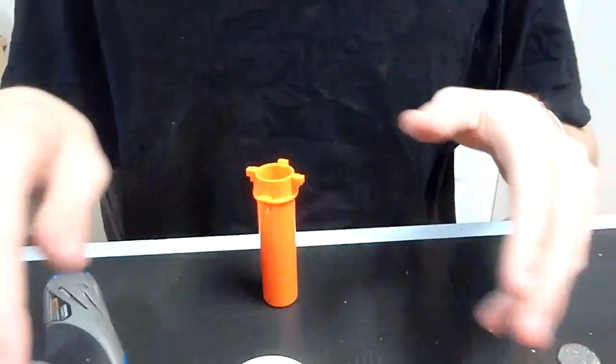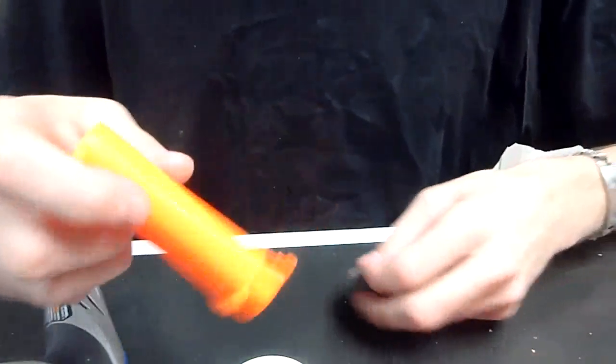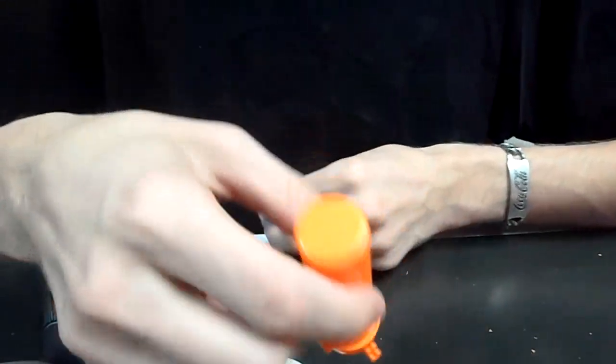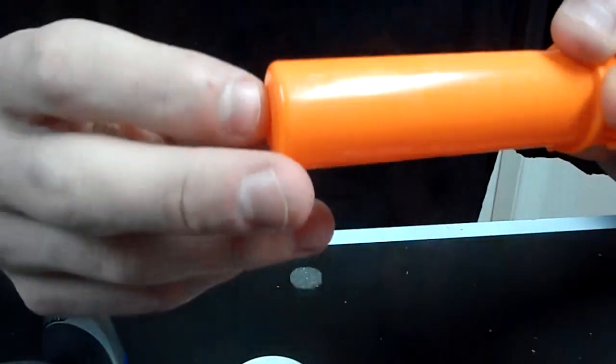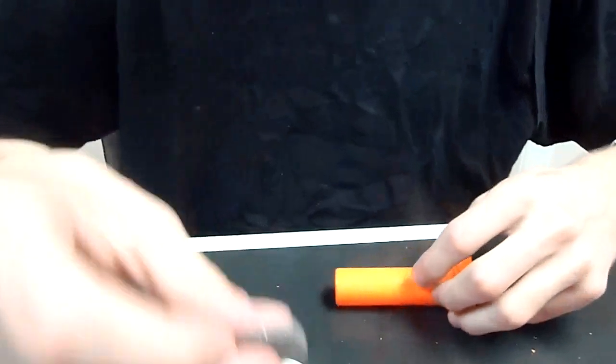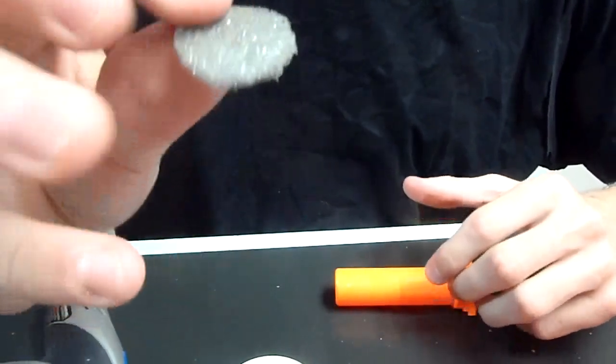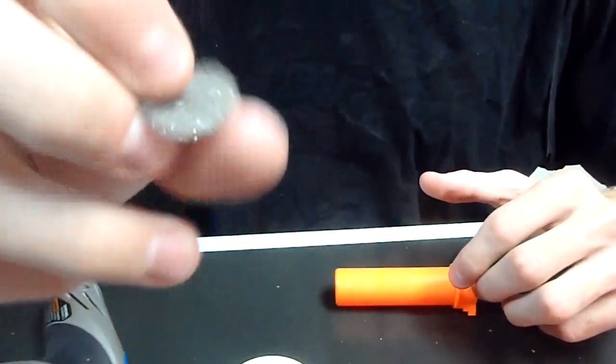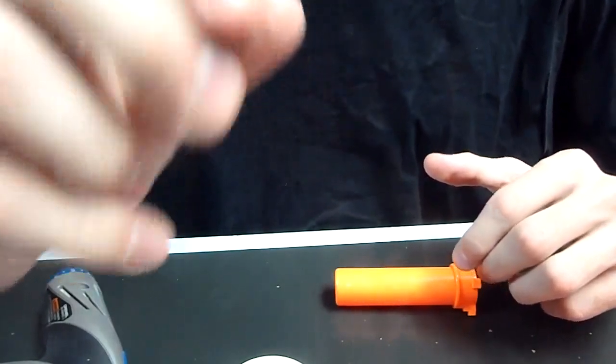The other really important thing you need to do is the next part of this blaster that will break is the end of the plunger tube. What you need to do is cut out a piece of craft foam like this. This is basic craft foam. It's not very thick and it's easily compressible. This is what you want.